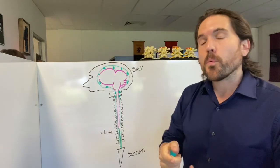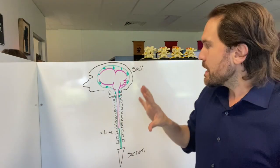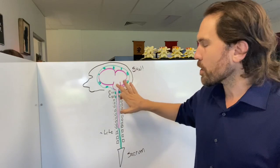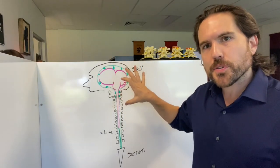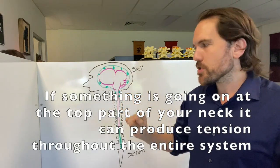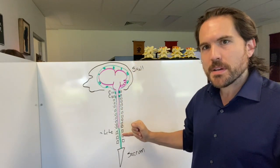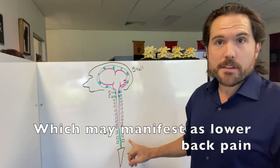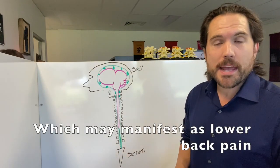Now, if we do that, where is the tension going to be perceived? It's going to be down here. In other words, what I'm proposing as a possibility is that if you have tension going on because something is not congruent in the upper part of the neck and the skull and this area right through here, it can produce tension through the entire system that may actually manifest as lower back pain.